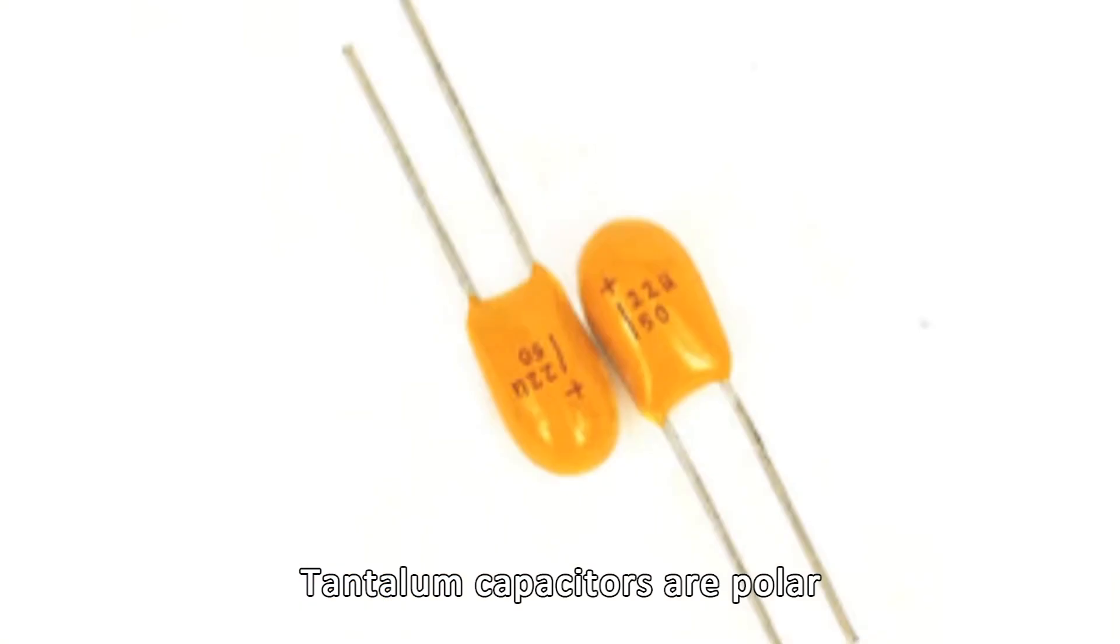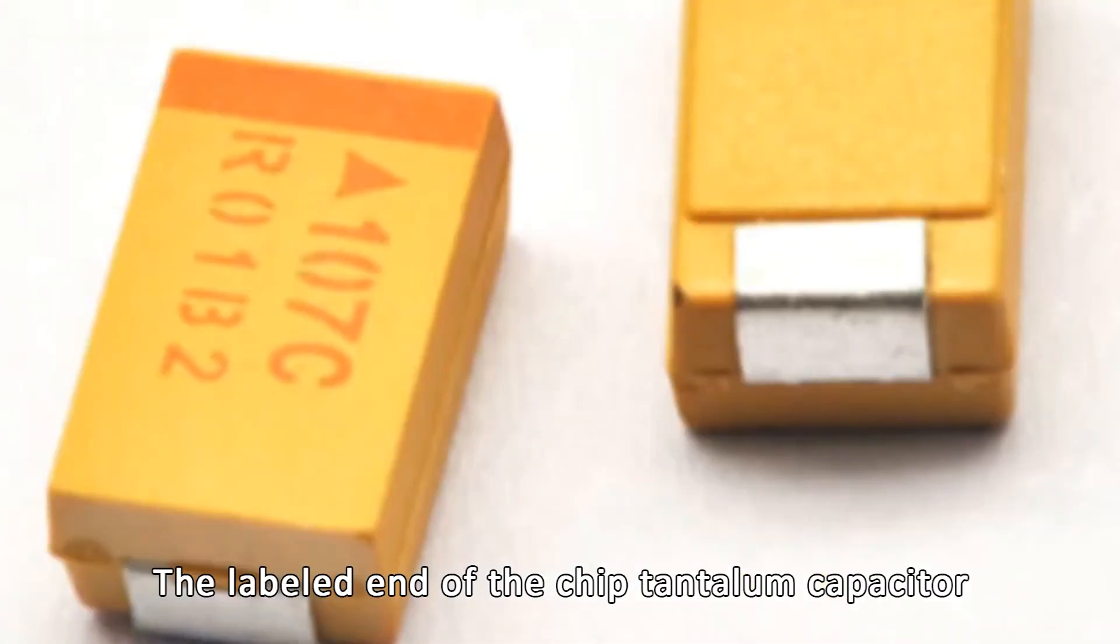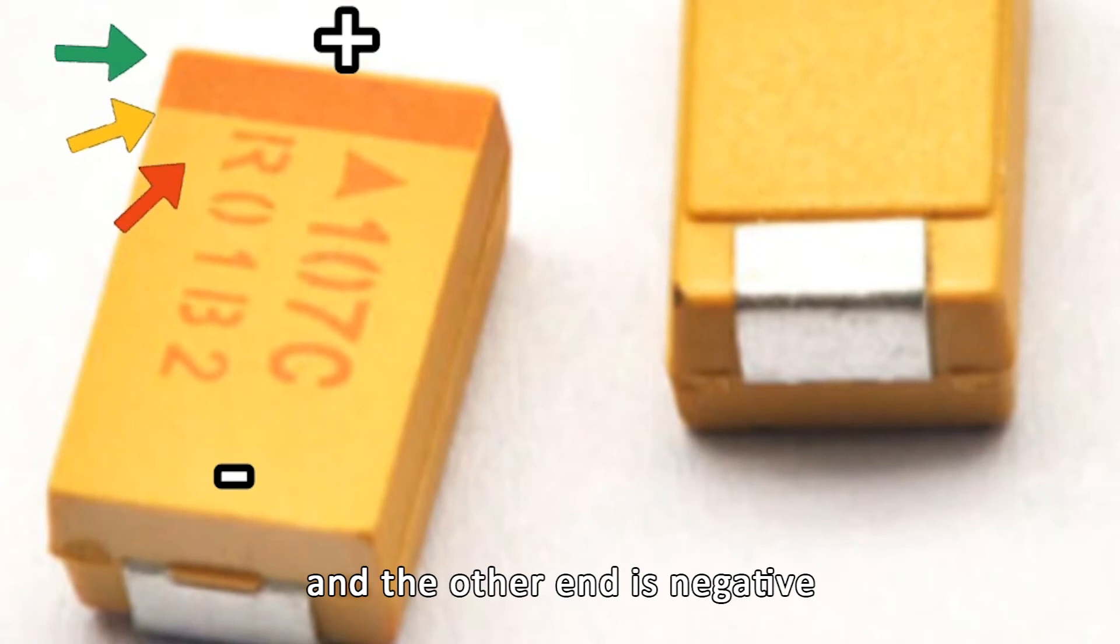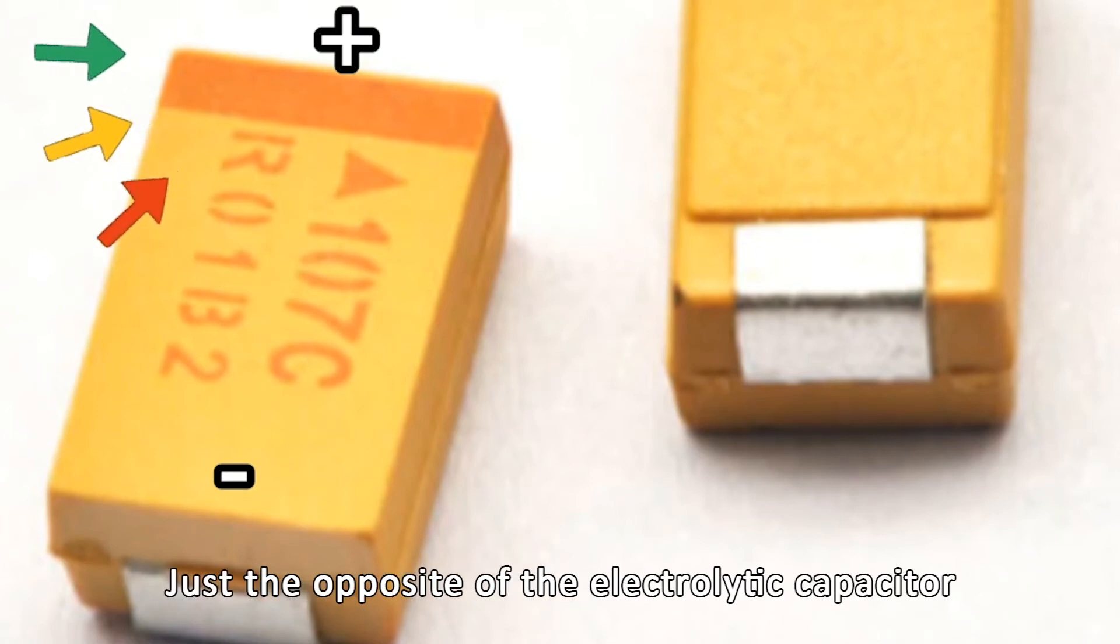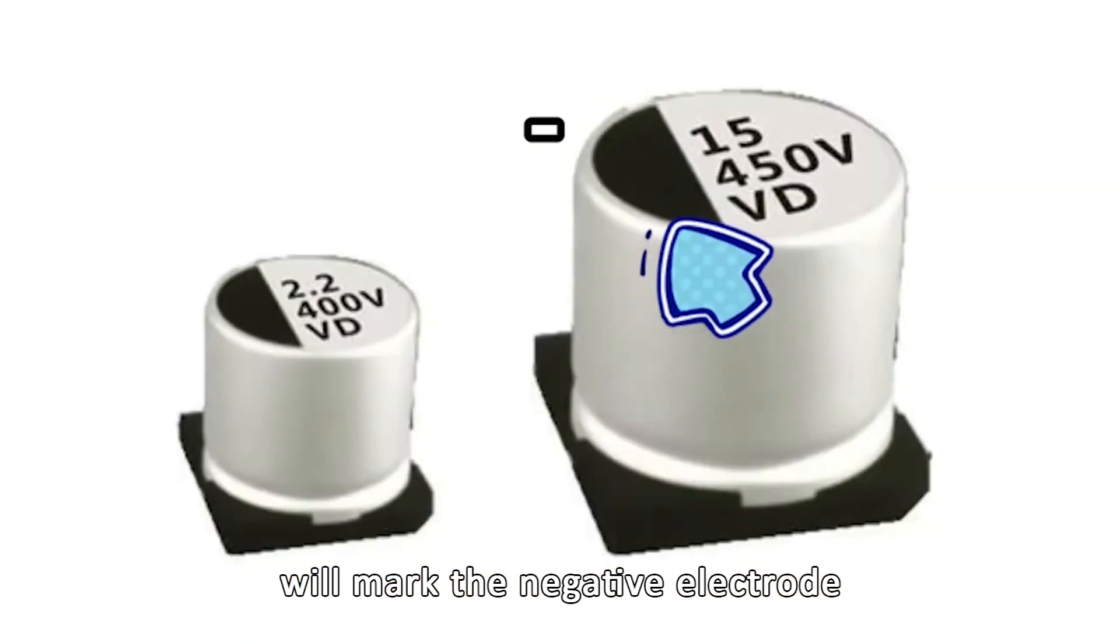Tantalum capacitors are polar. The labeled end of the chip tantalum capacitor is the positive electrode, and the other end is negative. Just the opposite of the electrolytic capacitor which will mark the negative electrode.